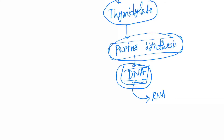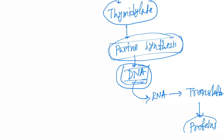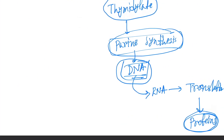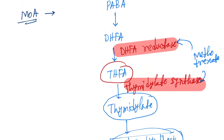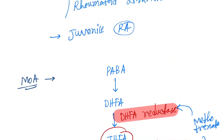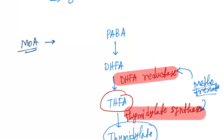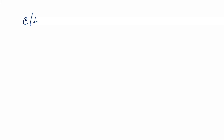Then purine synthesis will not occur, then DNA synthesis will not occur. From DNA, RNA is formed, and then it enters into translation and forms proteins. So no proteins will be formed further, and in case of cancer, no cell will be formed further. This is the mechanism of action of methotrexate.